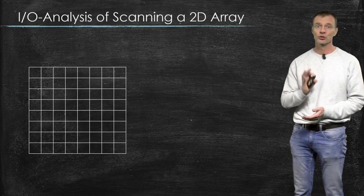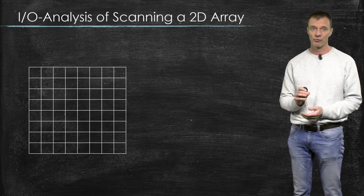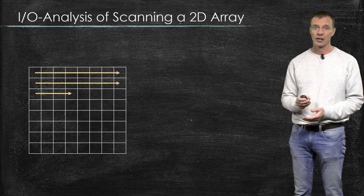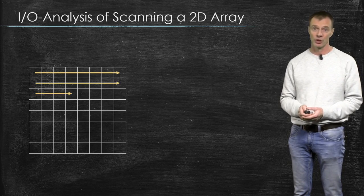Let's also quickly go back to the analysis of the algorithm for scanning over a two-dimensional array. Let's say we scan over the array row by row.